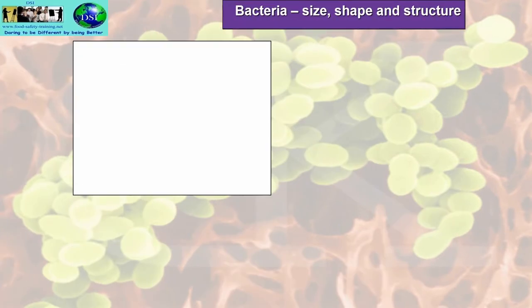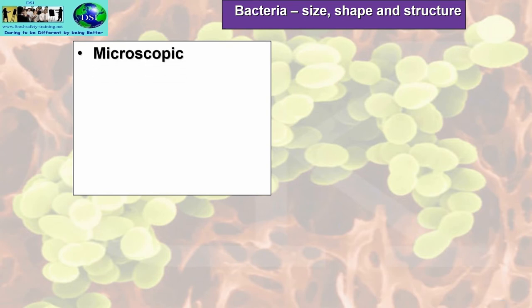Let's look at bacteria — their size, shape, and structure. First of all, bacteria are living organisms. They're animals. They're microscopic, so you can't see them with the human eye. You can only see them with a microscope — you can see colonies of bacteria. A million salmonella, for example, would be about the size of a pinhead.